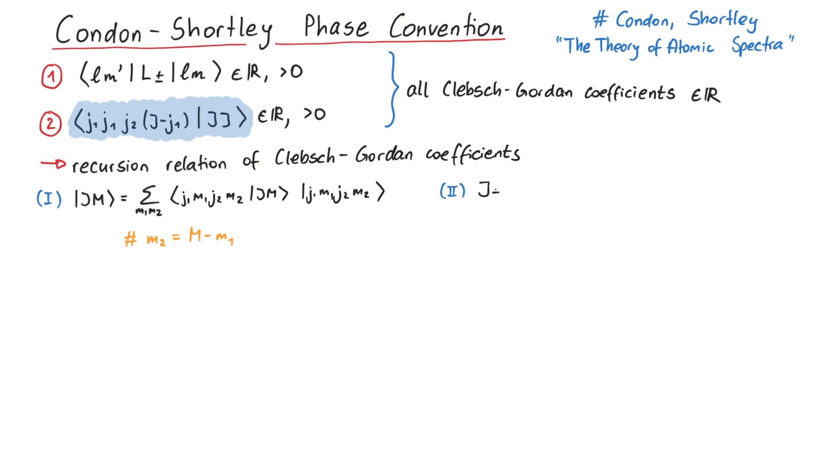And second, how to write the ladder operators of the coupled basis in terms of ladder operators of the product basis. This can be achieved by writing the operators as a tensor product, where for instance j1 only acts on one Hilbert space, so that we need the identity operator for the other Hilbert space.